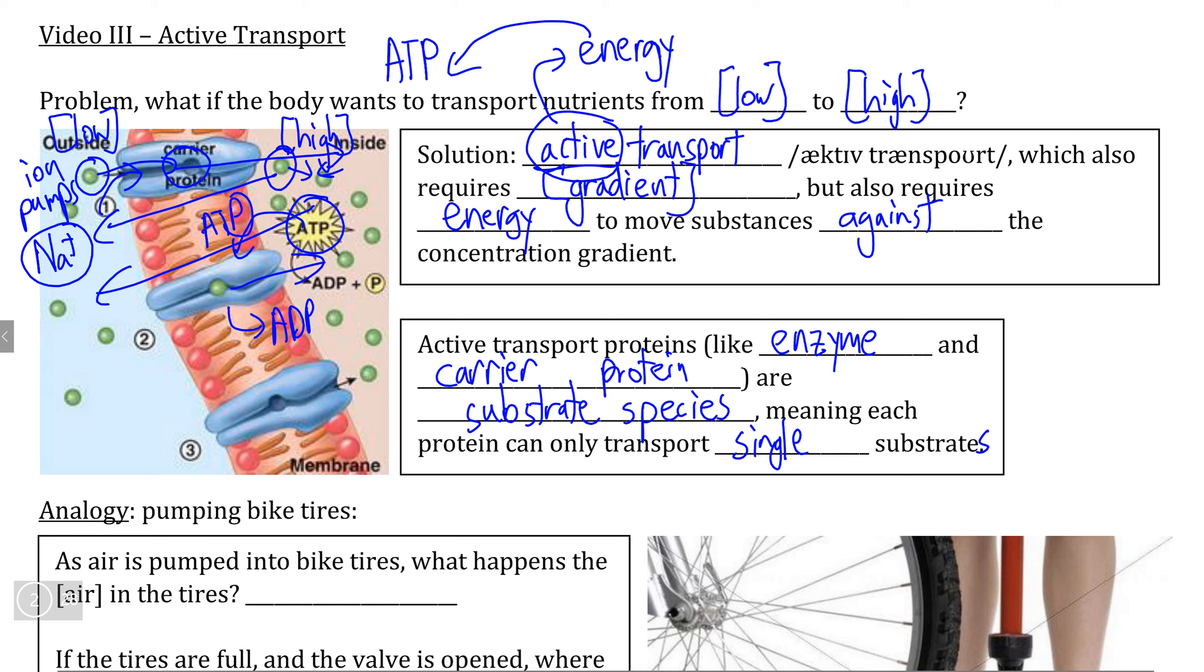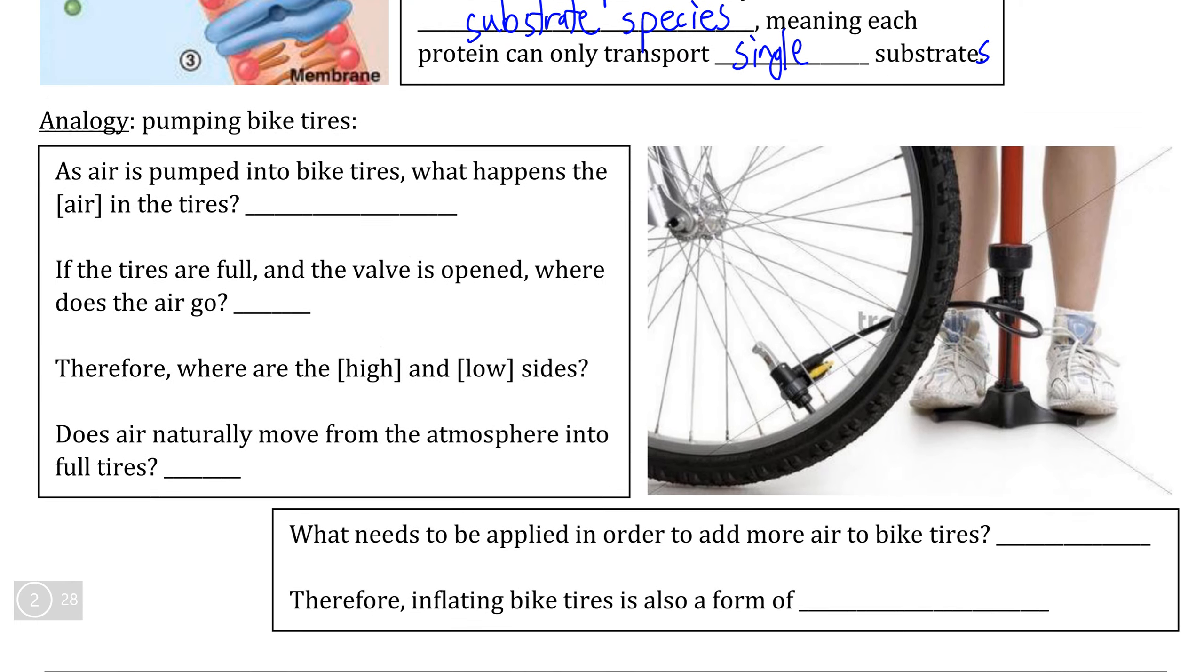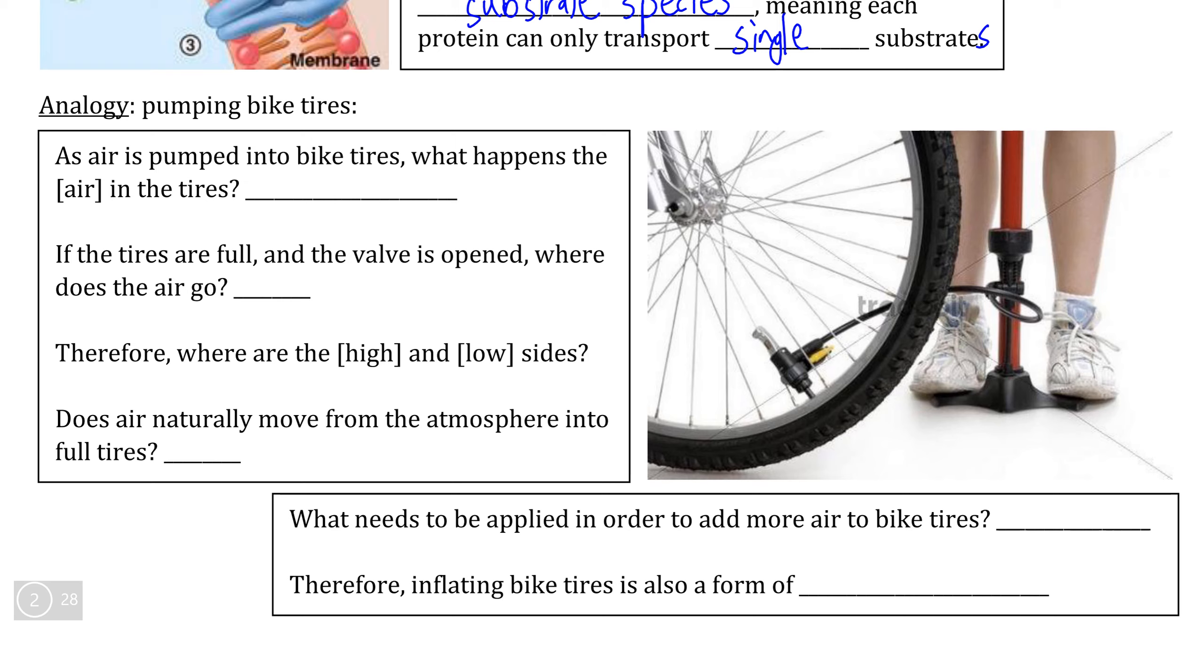One analogy to help us understand why active transport needs to be an energy requiring process is something that anybody who has ridden a bike can attest to. If you think of the process of pumping bike tires, think about this question here.